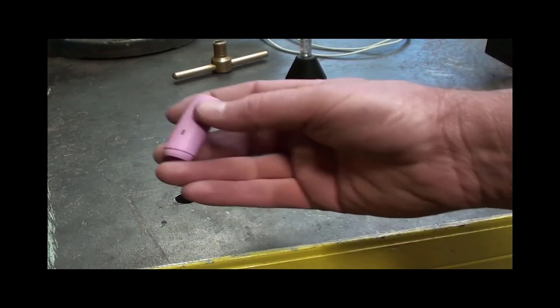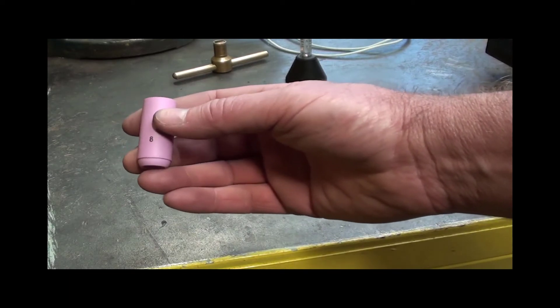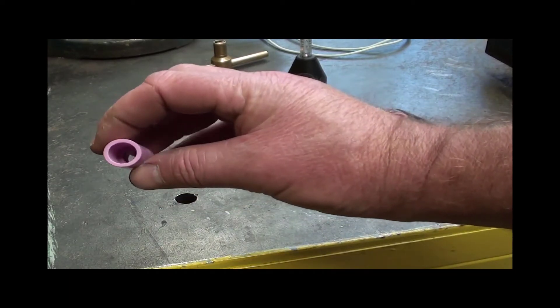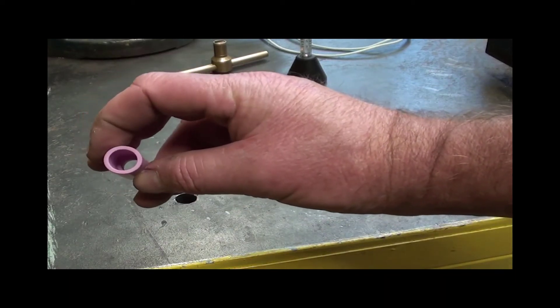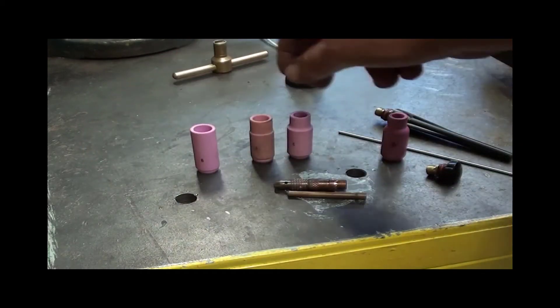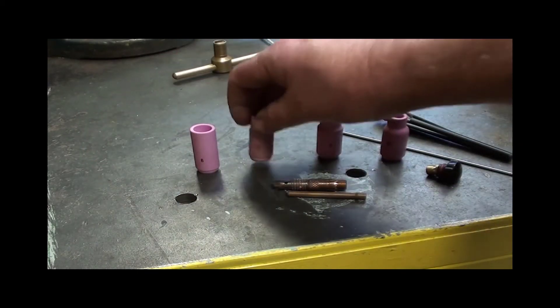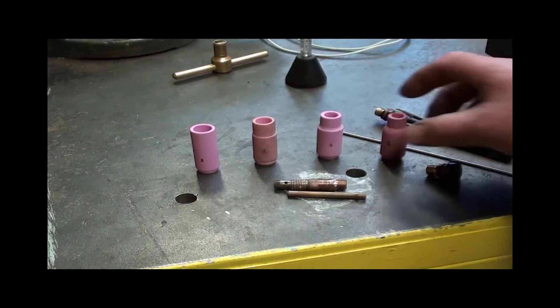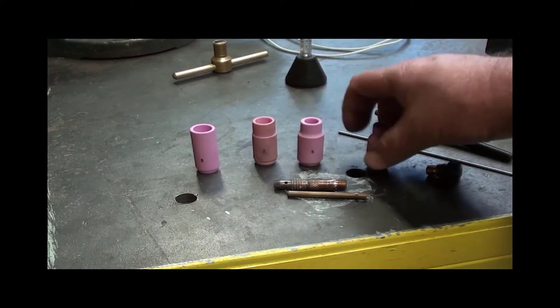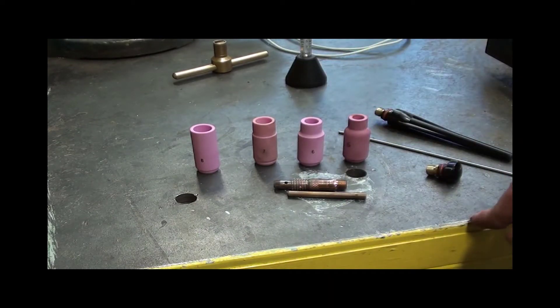Whereas the number 8 at the other end, 8 times 1.5 is 12 millimetres. So the internal bore of that ceramic will be 12. 6 times 1.5 is 9. 7 times 1.5 is 10.5. So they will just allow you to get a bit more gas through them.